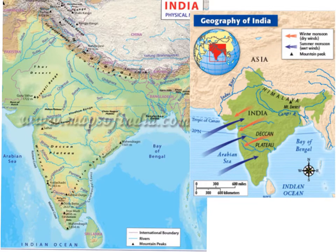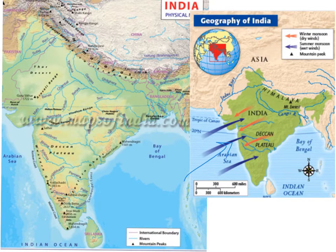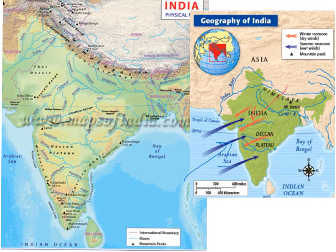You should have come to the conclusion that the summer monsoon — the wet winds, seen here in blue — bring the rain to India. Why would that be? Because the wind is coming from the Arabian Sea. The winds that bring the dry, cool air would be the winter monsoons coming down out of the Himalayan mountains, bringing cool air from the high elevations of the Himalayas.